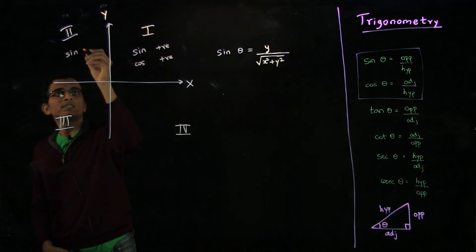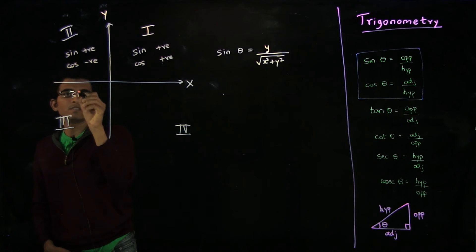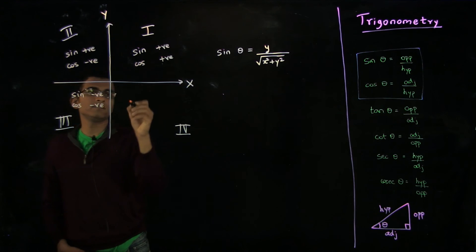Here, the sine will still be positive, whereas the cosine will be negative. In this quadrant, sine will be negative and cosine will also be negative.